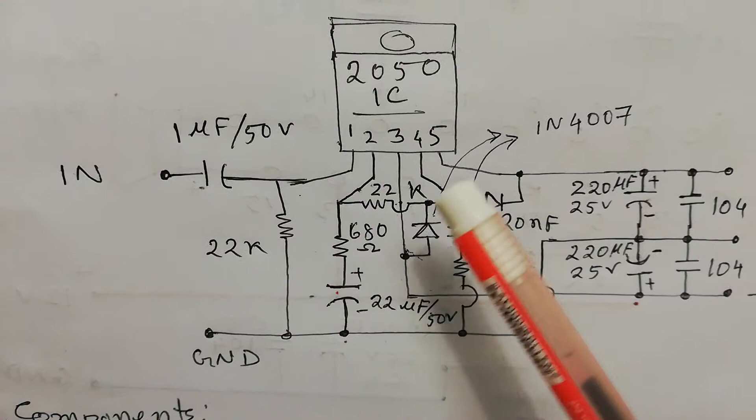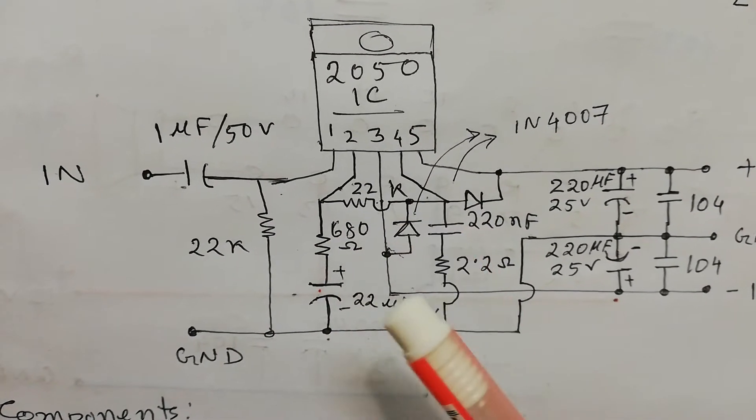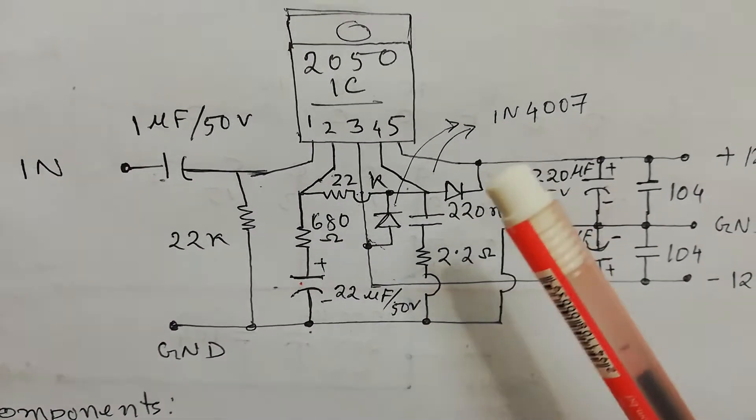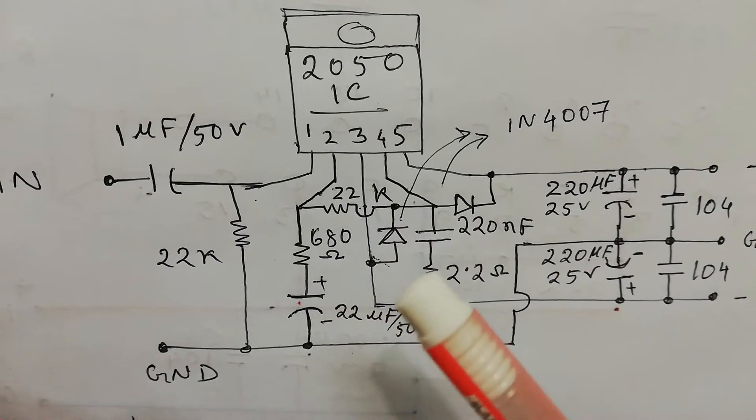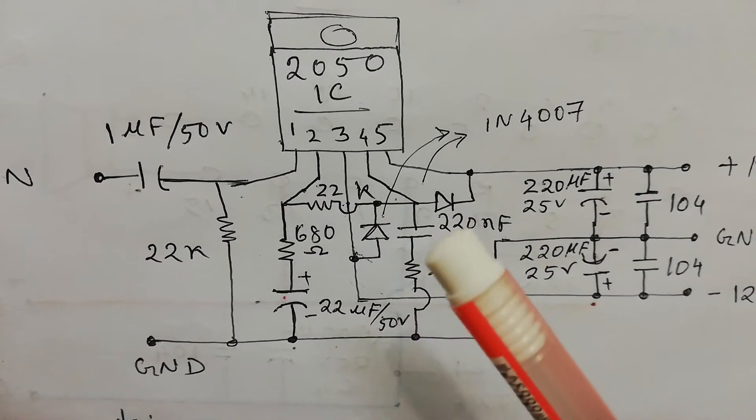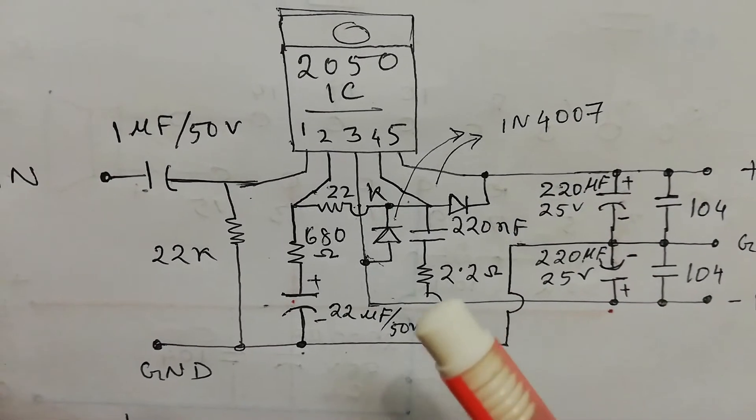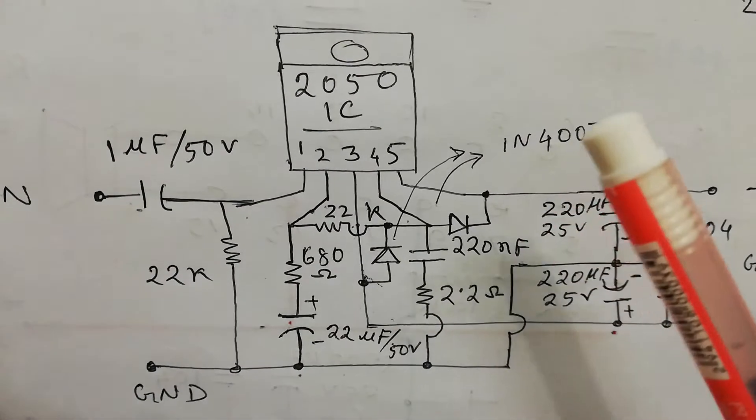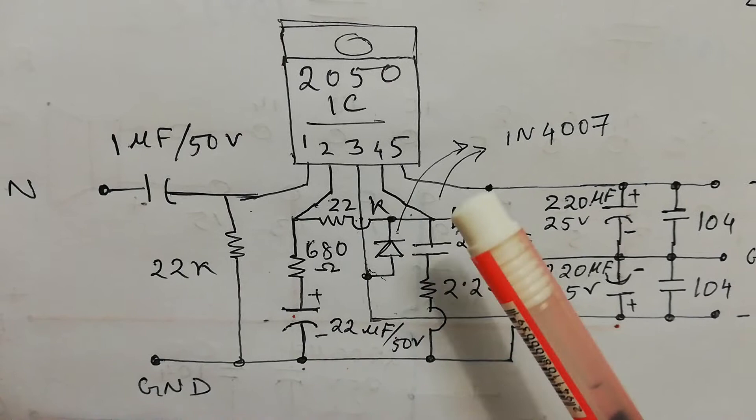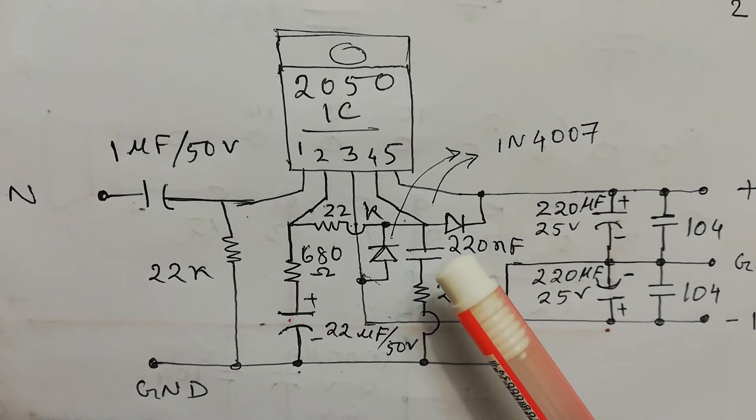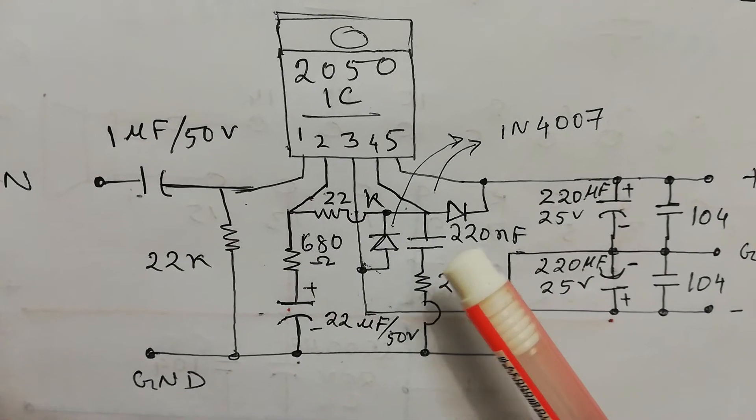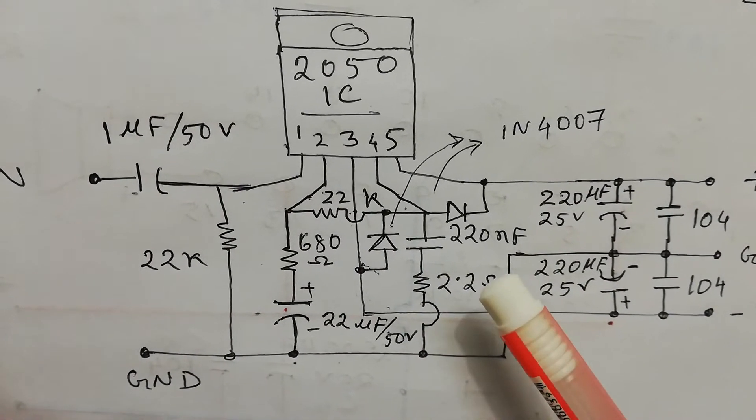Pin number two and four I connected with 22k resistor. And from pin number four to five and pin number four to three, I inserted two 1N4007 diodes here and here.